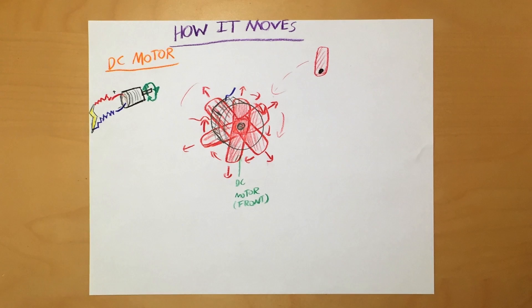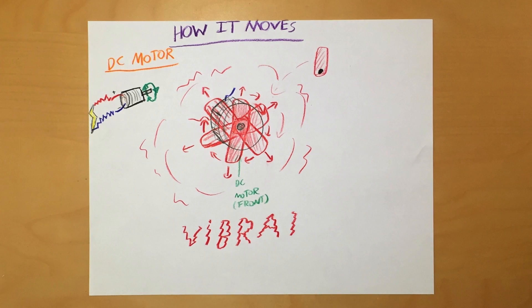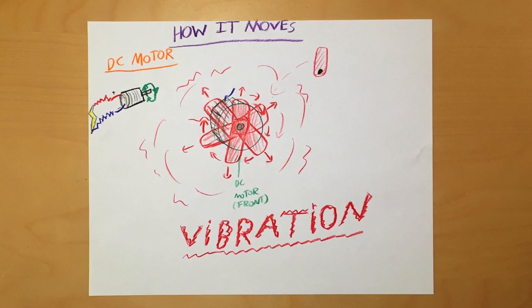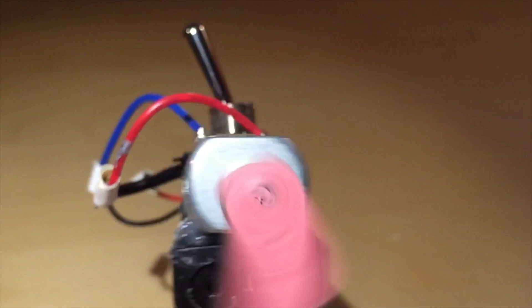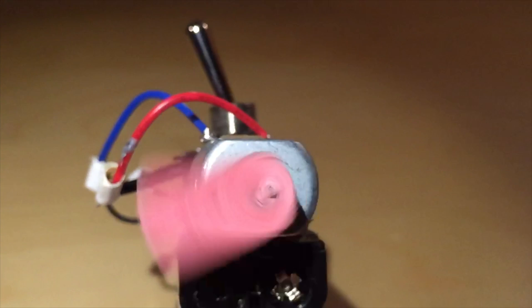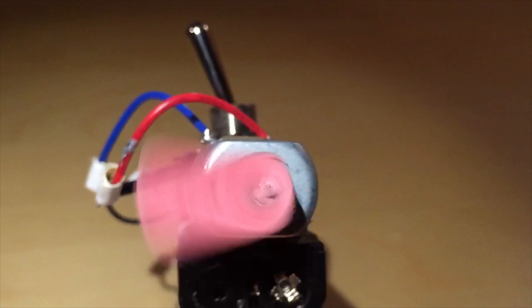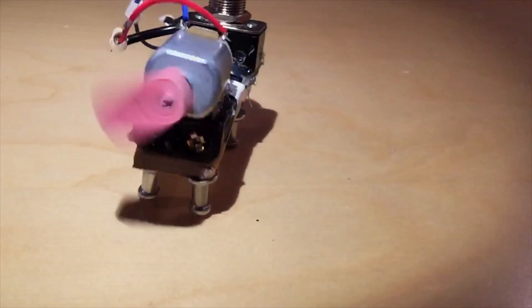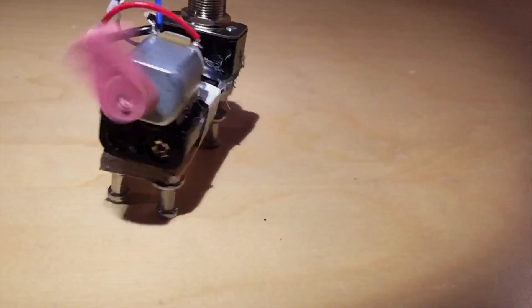While it spins, the eraser continues to pull the robot in different ways, creating vibrations that move the robot. Let's watch this mechanism in action. Just when the Jitterbot starts to move in the right direction, the eraser pulls it back the other way. Then, once it goes that direction, it's pulled again. This cycle keeps going on until you turn the robot off.